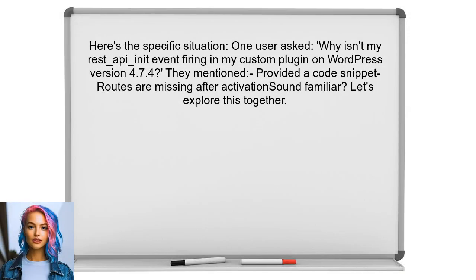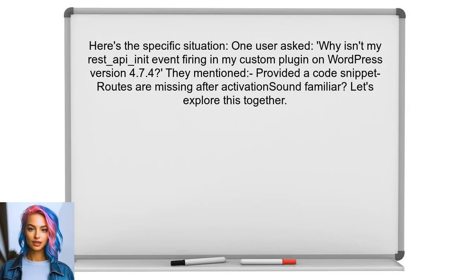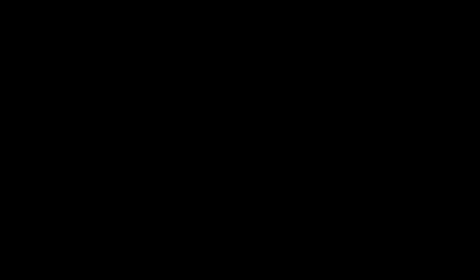Let's look at the specific situation. One user asked: why isn't my REST API init event firing in my custom plugin on WordPress version 4.74? They provided a code snippet and mentioned that even after activation, the routes were missing. Sound familiar? Let's explore this together.